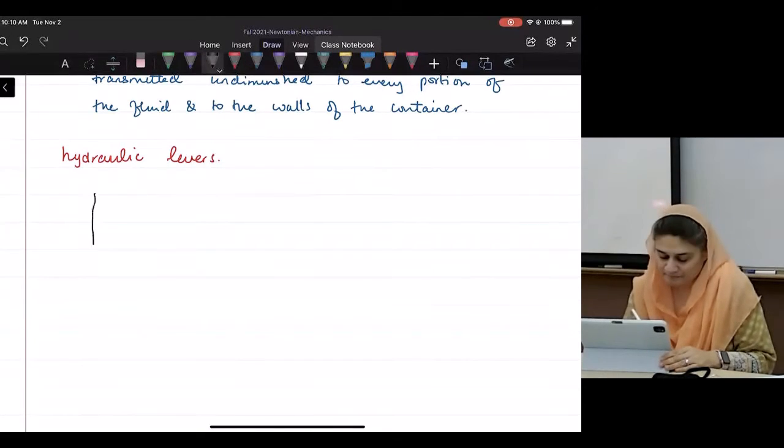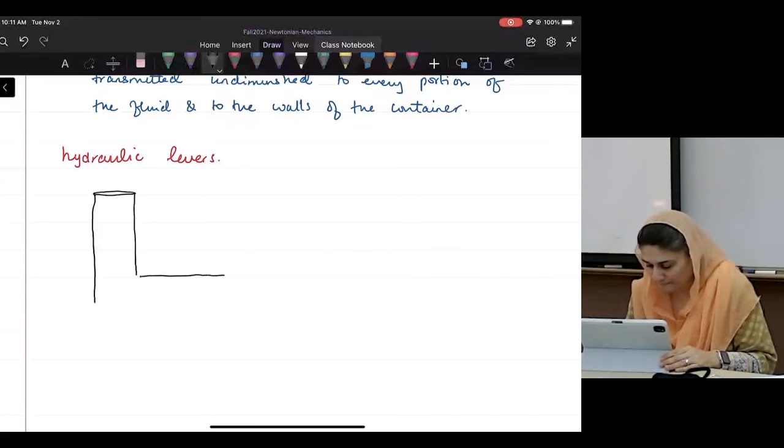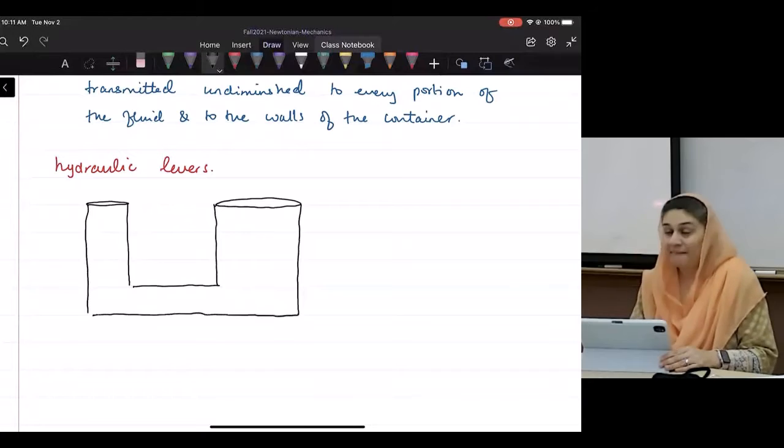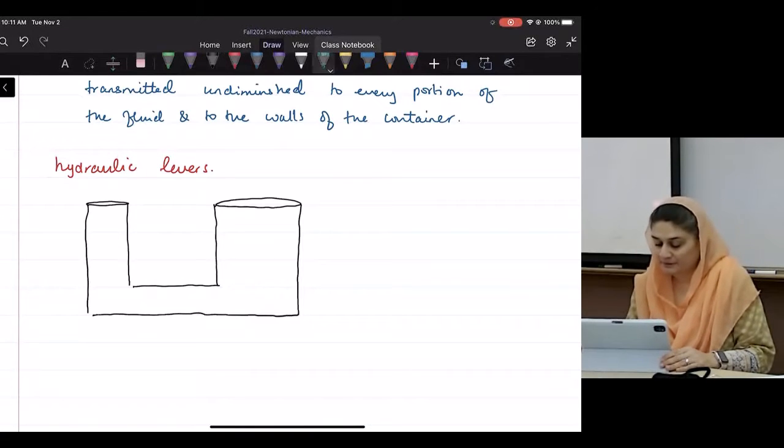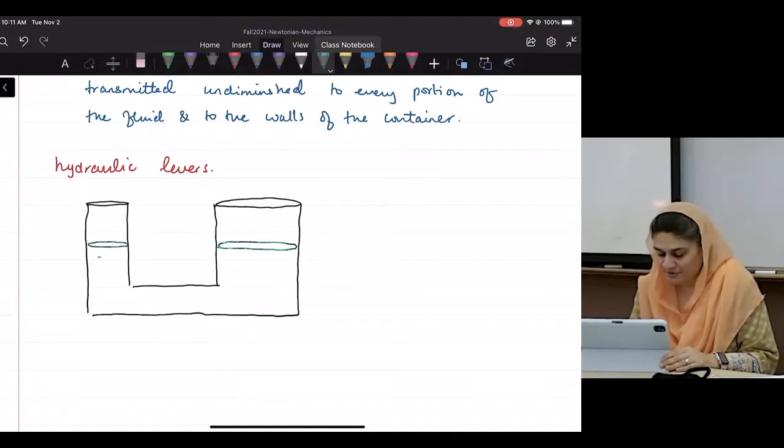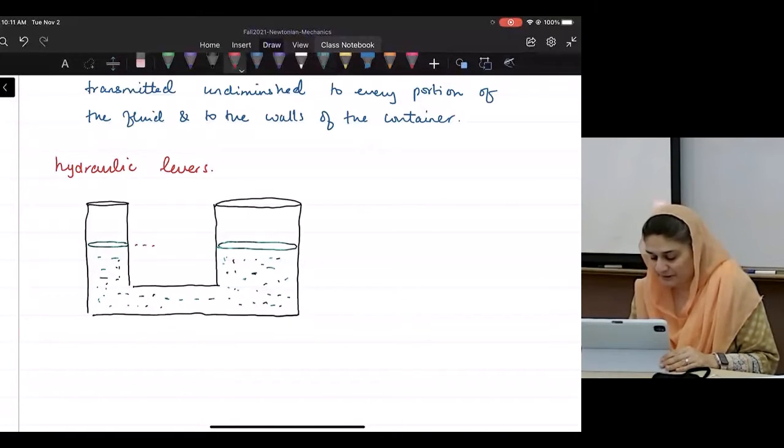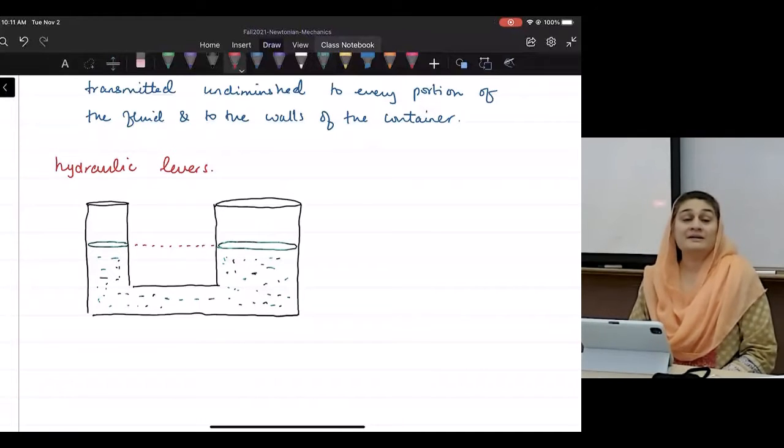A hydraulic lever, make this side smaller, this side bigger, and fill it with a fluid. So what happens to this fluid if left to its own devices? Both of these levels will be equal. Yes, water maintains its level.